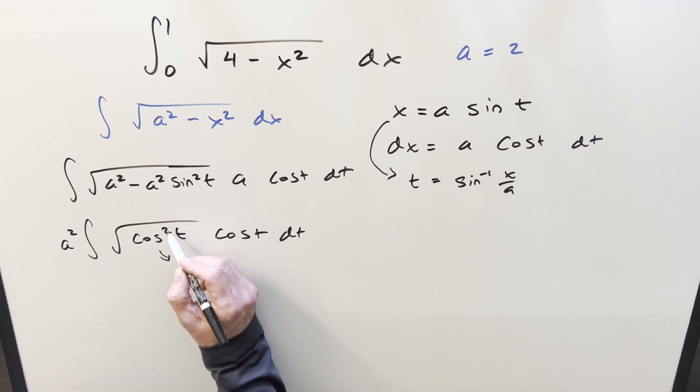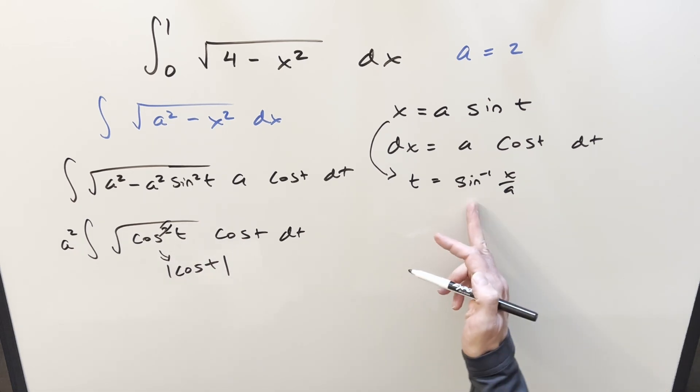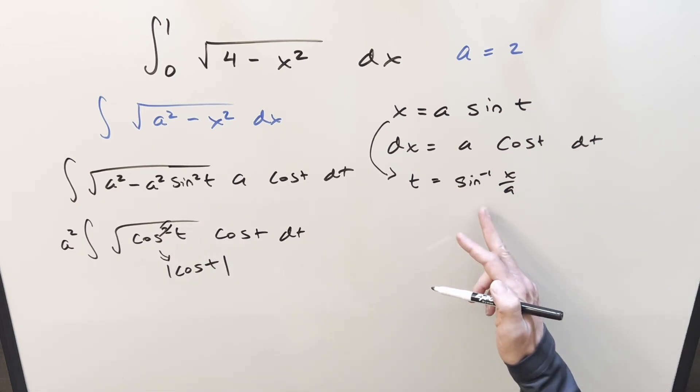But this thing here, this kind of cancels and we're left with absolute value cosine t. But this is always going to be positive. It has to do with the way we define the inverse, the range is always going to be between minus pi over two to pi over two. That's quadrants four and one, always positive for cosine in that region.